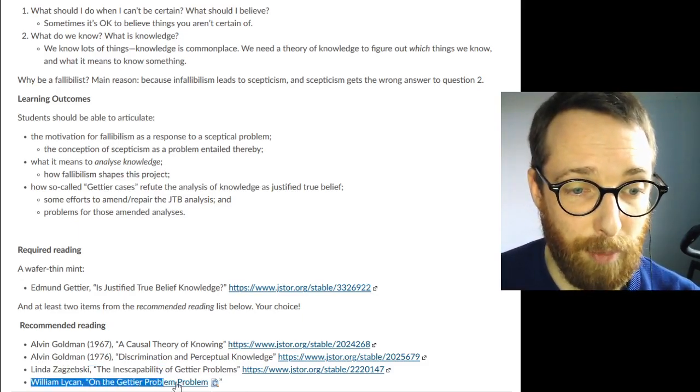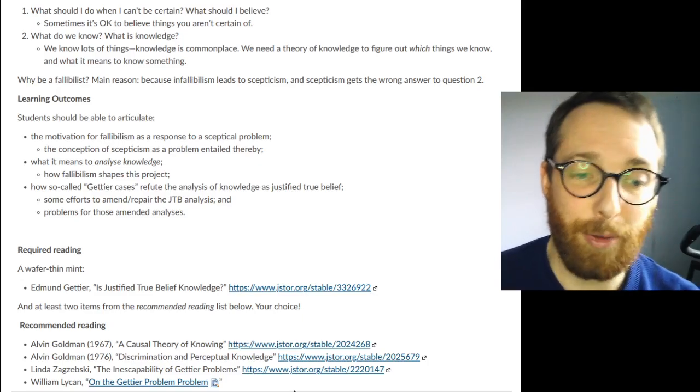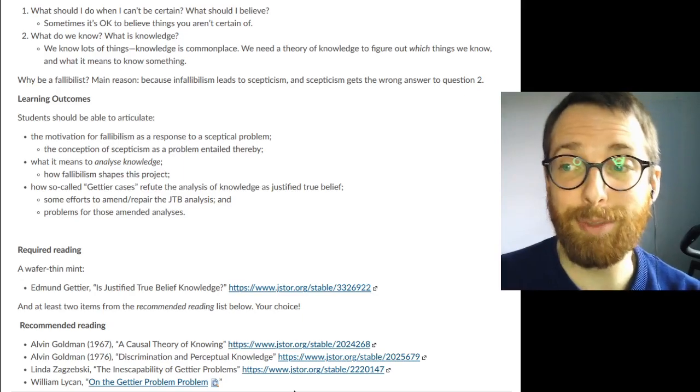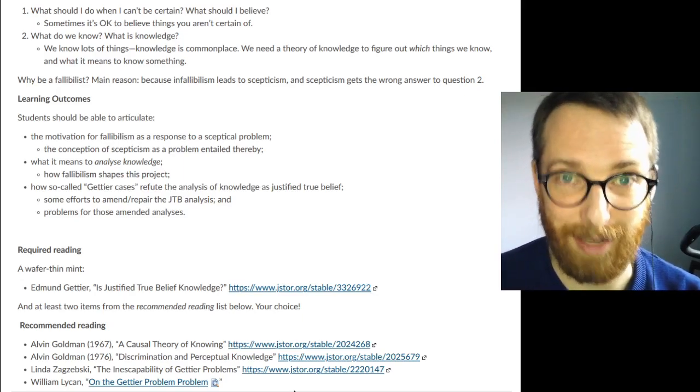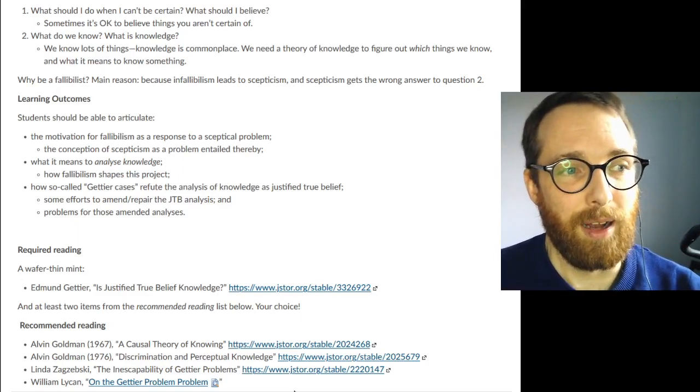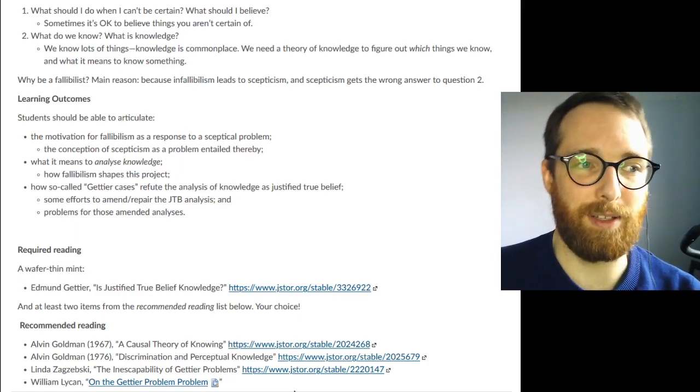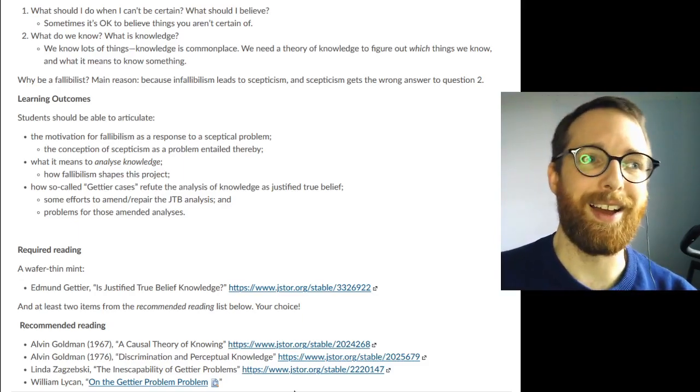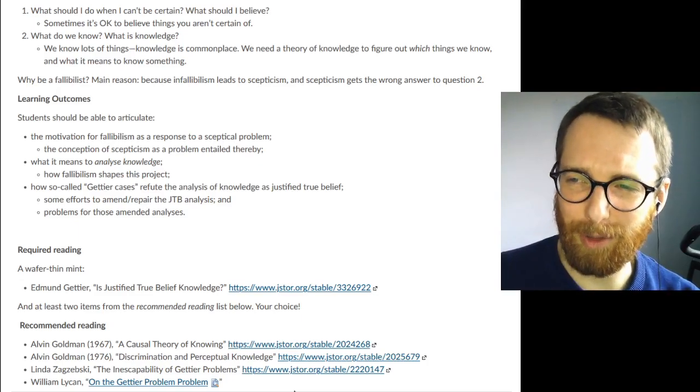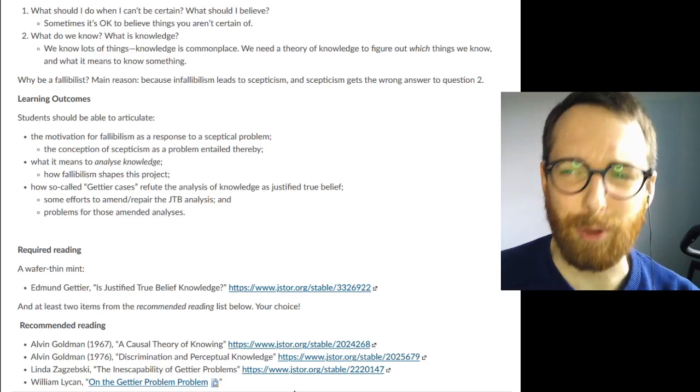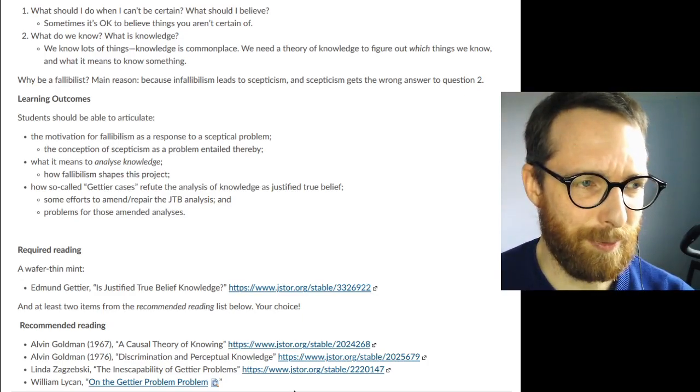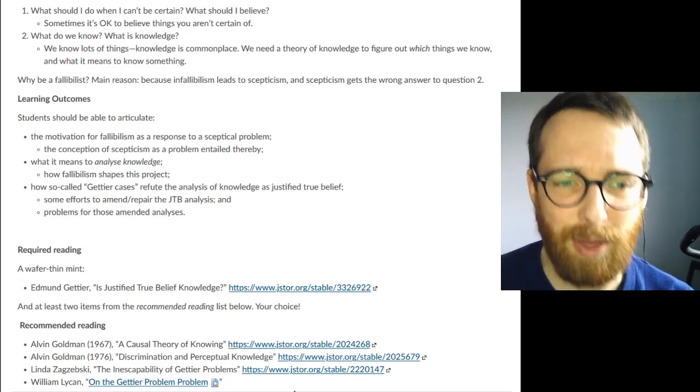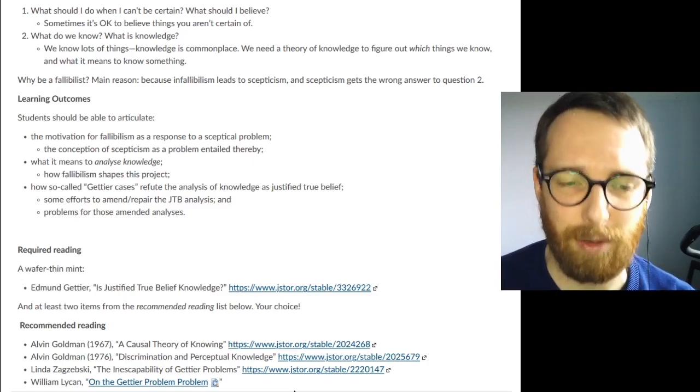And then we have this paper from somewhat later by William Lycan on the Gettier problem problem. That's not a typo. He's sort of reflecting on after this explosion of responses to Gettier's tiny little paper, after this explosion of responses and the consensus forms that none of them have really worked and they're all a lot of work to get through, there comes to be this thought among a lot of philosophers that there was just something wrong with the project in the first place. Like, because so much of this stuff came out and we didn't get a clear answer, we still haven't figured out what the right analysis of knowledge is, that there was something wrong with the project of trying to analyze knowledge in the first place.